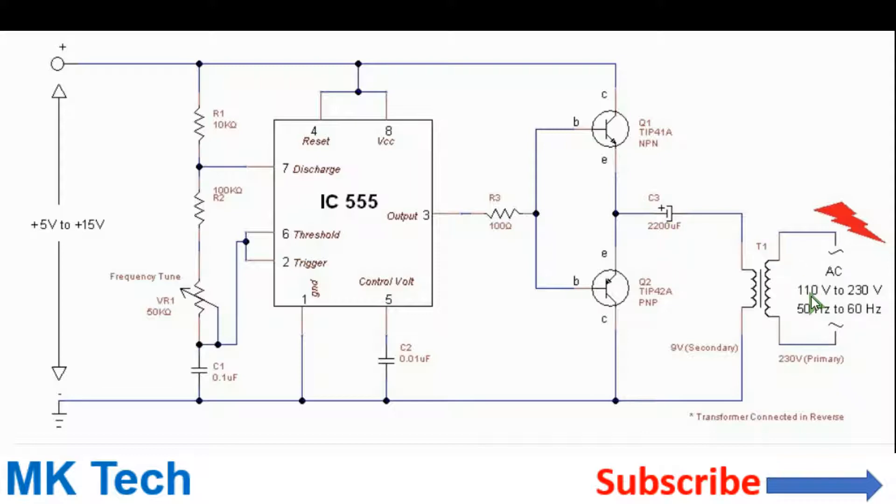For the transformer, if you need 110 volts AC, you should use one with a ratio of 1 to 10, while if you want 230 volts, you should use one with a ratio of 1 to 20. This will allow you to have an input of 12 volts to 110 volts and 12 volts to 230 volts, respectively.